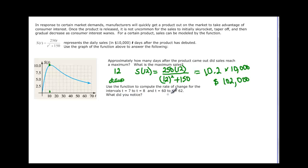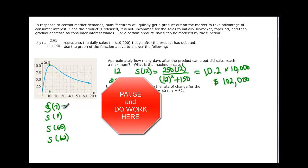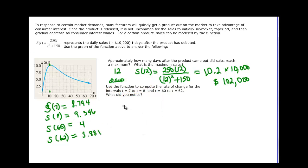Use the function to compute the rate of change for the intervals 7 to 8 and 60 to 62, then see what we notice. Remember, we have to find s(7), s(8), s(60), and s(62). Go ahead and put those into your calculator. You might want to put this function in y equals, then look at your table since you have so many values. Using the difference of the y's over the difference of the x's.